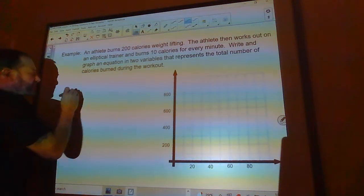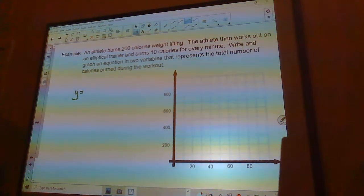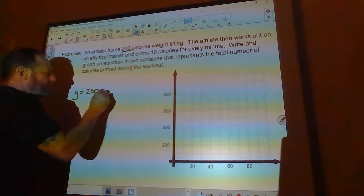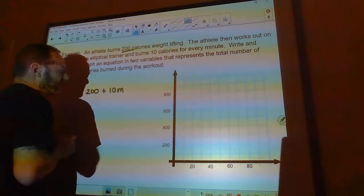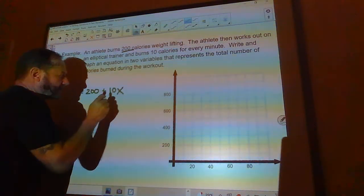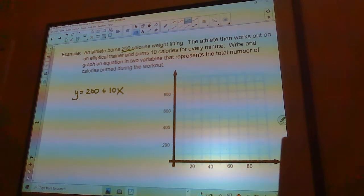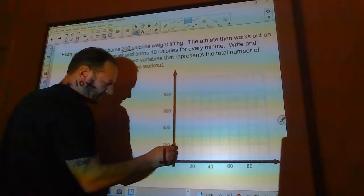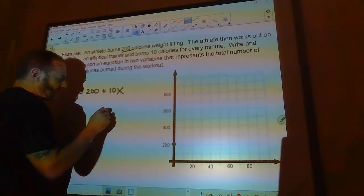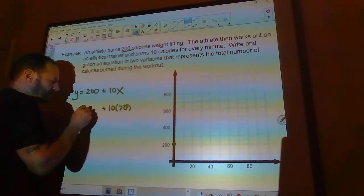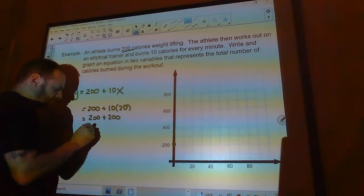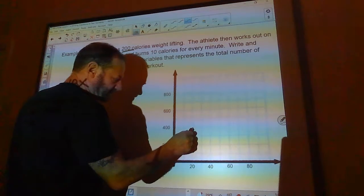So the number of calories is going to be my y. That's going to be my dependent variable. And he burned 200 calories weightlifting right off the bat. So 200 plus he's burning 10 calories for every minute. So let's use x for minutes. So there is my equation. At zero minutes, he's already done his weightlifting. That's going to be right there. Zero, 200. And then in 20 minutes, if I plug 20 in here, I get 10 times 20 plus 200. 10 times 20 would be 200. So this would be 200 plus 200 would be 400. So in 20 minutes, he had burned a total of 400 calories.